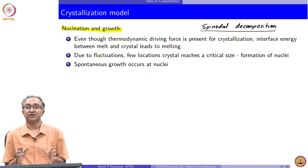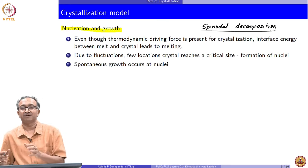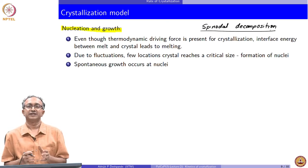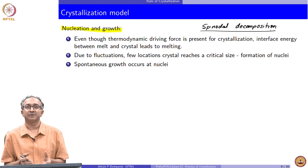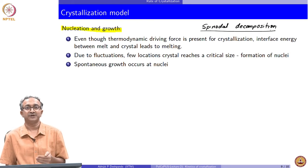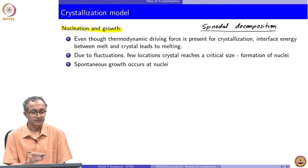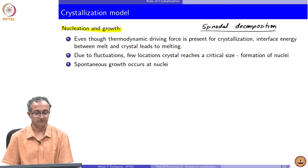The other mechanism is spinodal decomposition, where structure forms simultaneously throughout the sample. This distinction is important: in nucleation and growth, nuclei start in some places and grow outward; in spinodal decomposition, crystalline and amorphous phases form in a co-continuous manner throughout the sample. The final morphology or microstructure is very different for the two processes, so from an engineering point of view it is important to know which mechanism is followed.